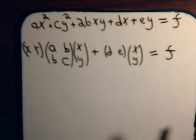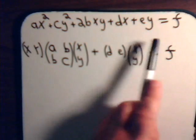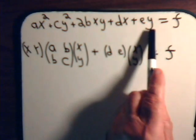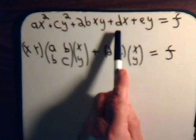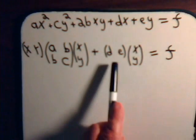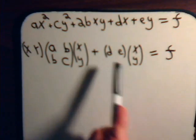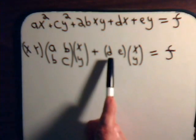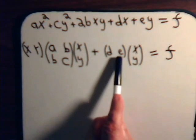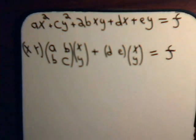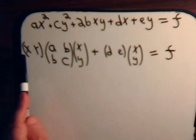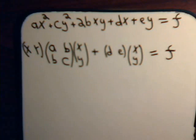For the linear part of the equation — x times some coefficient and y times some coefficient — we write those coefficients as a row vector times the column vector xy. So we have d times x plus e times y equals some constant. This gives us the general quadratic equation written in matrix form.